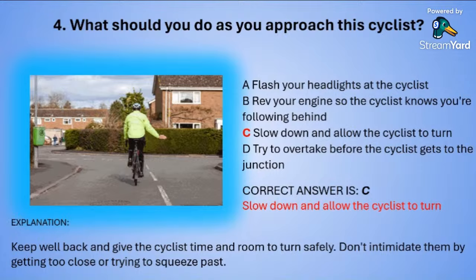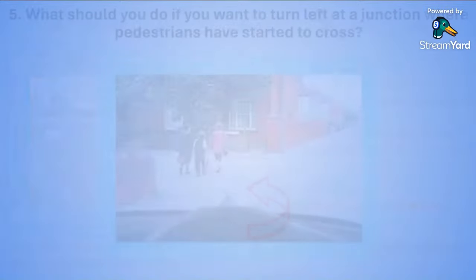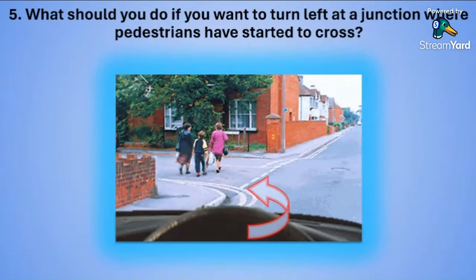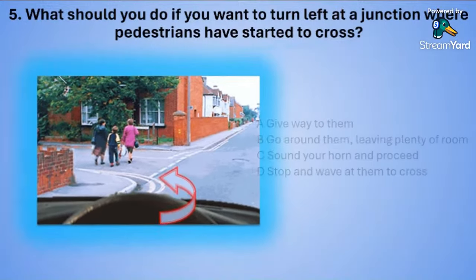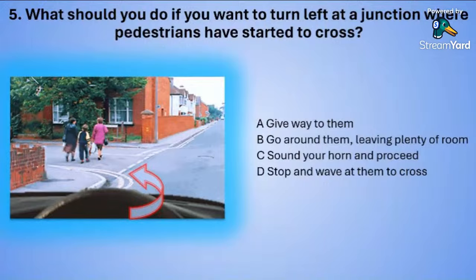Question number five: What should you do if you want to turn left at a junction where pedestrians have started to cross? A: give way to them. B: go around them leaving plenty of room. C: sound your horn and proceed. Or D: stop and wave at them to cross.